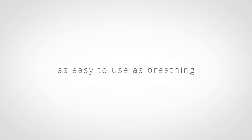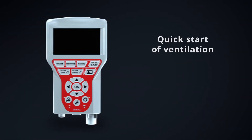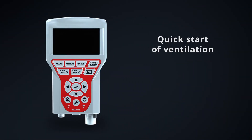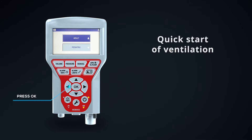As easy to use as breathing. To start ventilating the patient, we press the power button. We select adult or pediatric and confirm by pressing the OK key. And we press OK again to start ventilating.